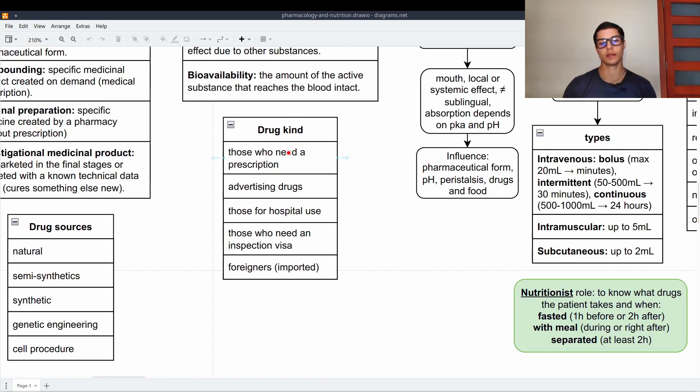Drug kind, those who need a prescription, then the advertising drugs, those for hospital use, those who need an inspection visa. This is for example a specific treatment for a specific disease such as rare type of cancer. And the foreigners, which are imported drugs.